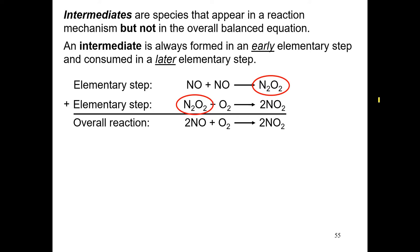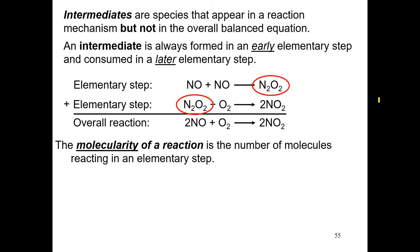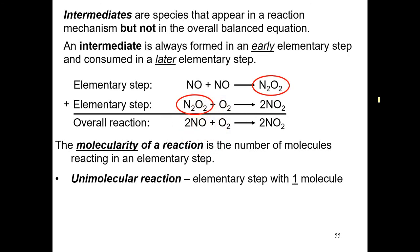Remember that we said that an elementary step essentially is a single collision event between molecules. So we can define what is called the molecularity of the reaction. That is, the number of molecules reacting in an elementary step. We can define some of these as being unimolecular. This is an elementary step with one molecule only. So one molecule by itself kind of like explodes or implodes and produces a product. Usually, these types of elementary steps occur when you have unusually big or complex or unstable molecules that will sort of like fall apart readily.